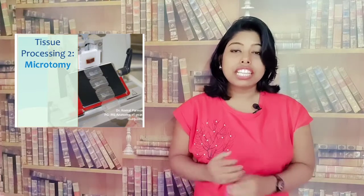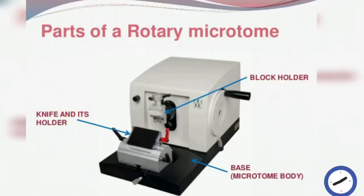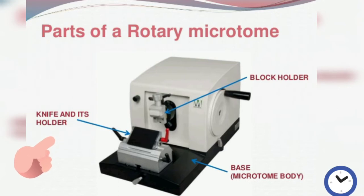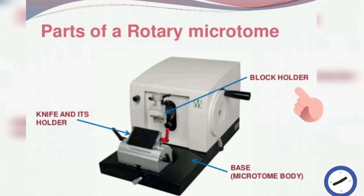Now we will read about the parts of the microtome. As you can see, this is the rotary microtome. You can see the knife and its holder, where the knife is kept to cut thin sections. The next part is the block holder — in the block holder we keep the tissue block that we prepared after embedding.